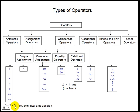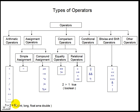Value ga amanna tijaada la so iliyo, datatype kiisu wuxuu noqon karaa mid kamid ah afarta datatype oo kala ah int, long, float, ama double oo lamman tood ba ah datatypes ka lambar rada. Comparison operators ka marka ay hawshu da fuliyan, sida arithmetic operators ka, ma so iliyan value amanna tijaada lambar ah; waxay so iliyan value boolean ah sida true ya false.